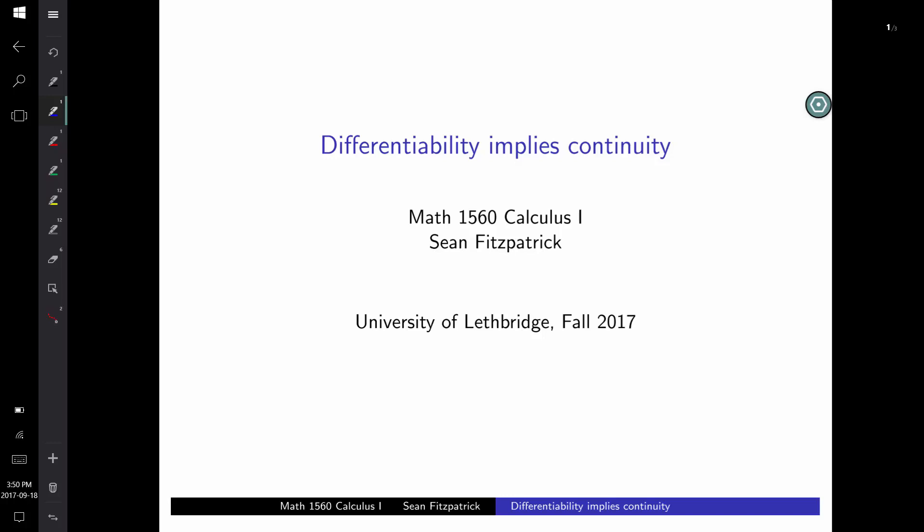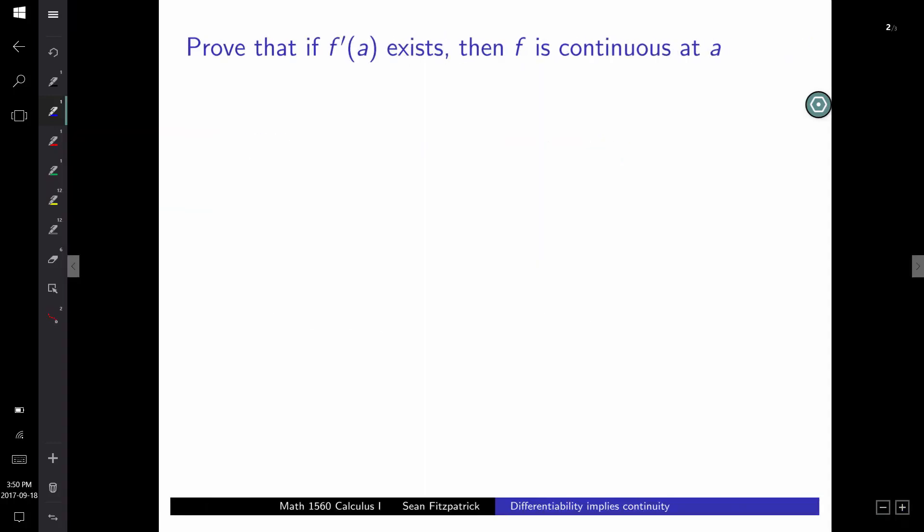There's one important result that we want to cover which has to do with the relationship between differentiability and continuity. So the theorem here is that every differentiable function is continuous. So if you know that the derivative exists at a point, you're guaranteed that your function has to be continuous there. So continuity is a precondition for the derivative to exist. It's impossible to have a derivative if your function is not continuous.